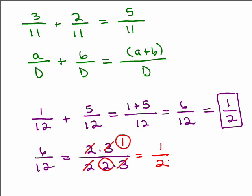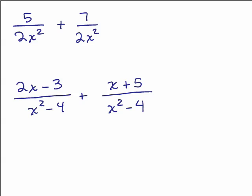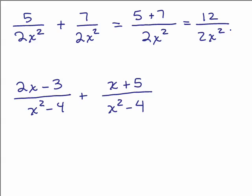We're going to use exactly the same procedure, but with algebraic denominators — possibly with variables. In the first example, we have a common denominator of 2x squared. Remember, we do not add the denominators; just write it down once and add the numerators. So 5 plus 7 is 12 over 2x squared. Since 2 goes into 12, we get 6, so the final answer is 6 over x squared.